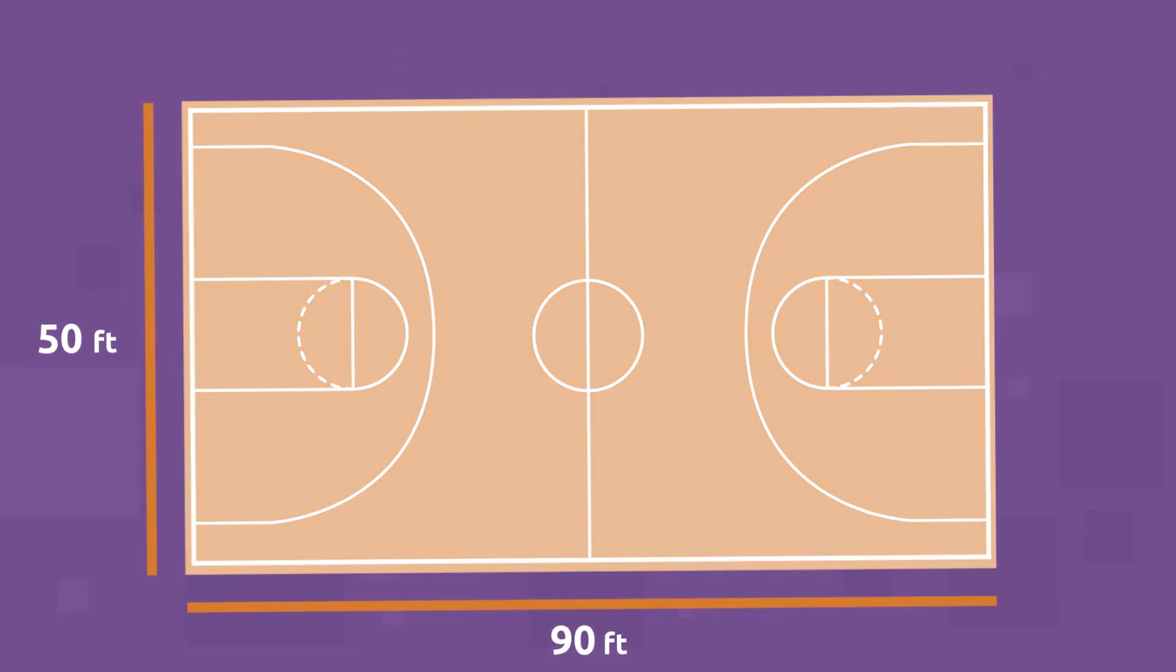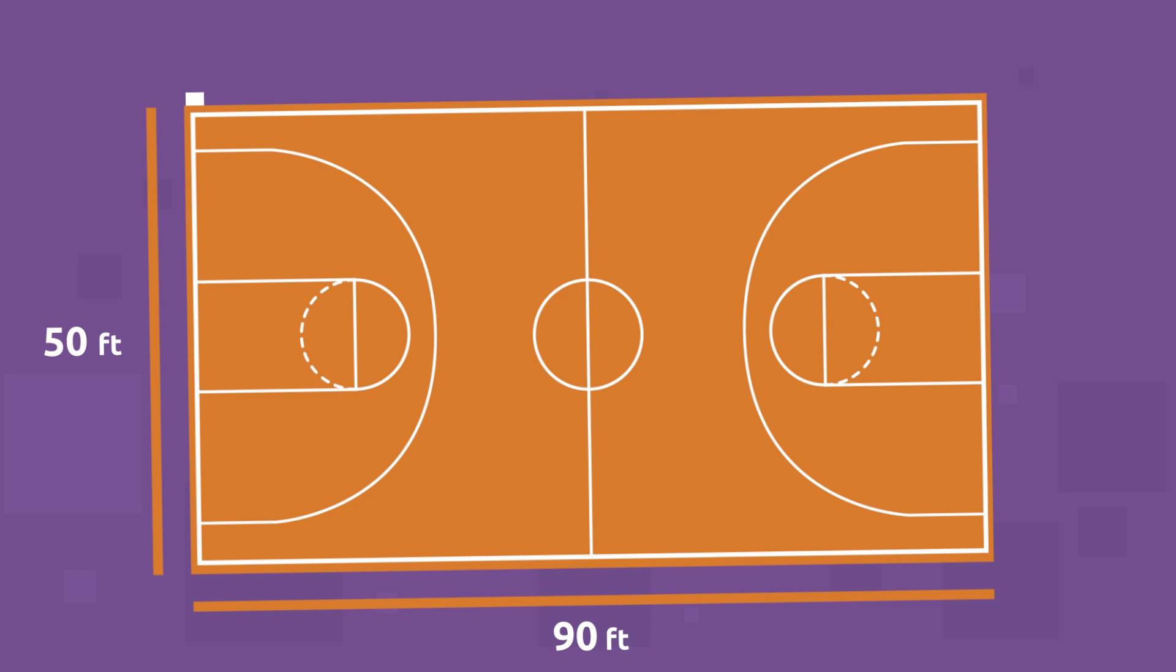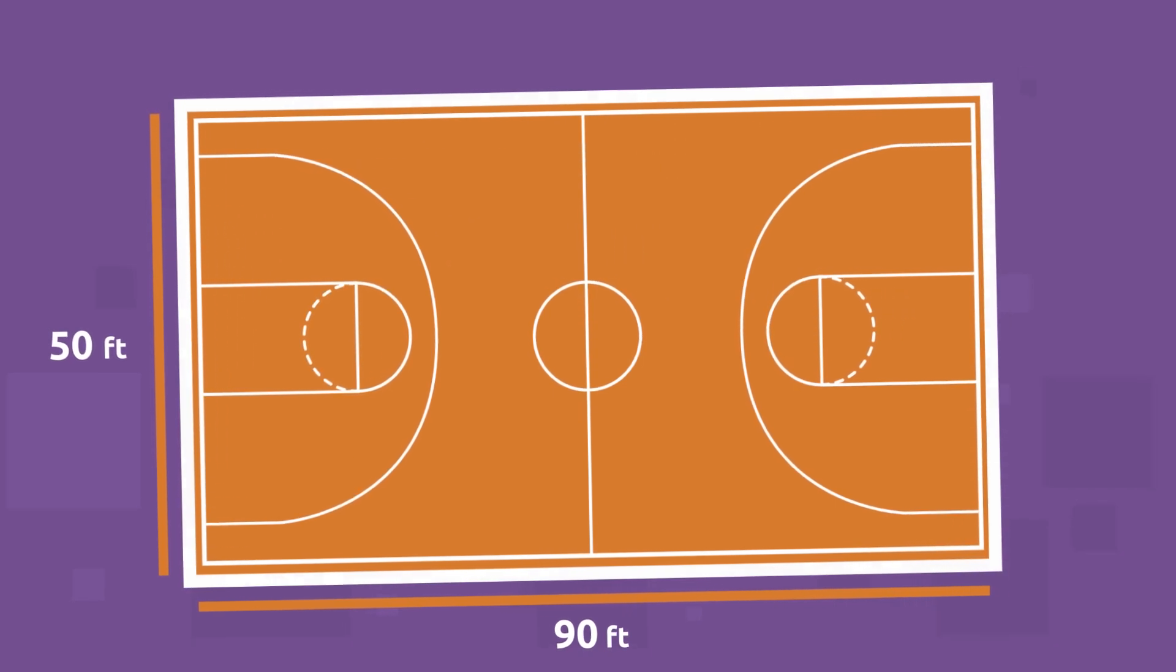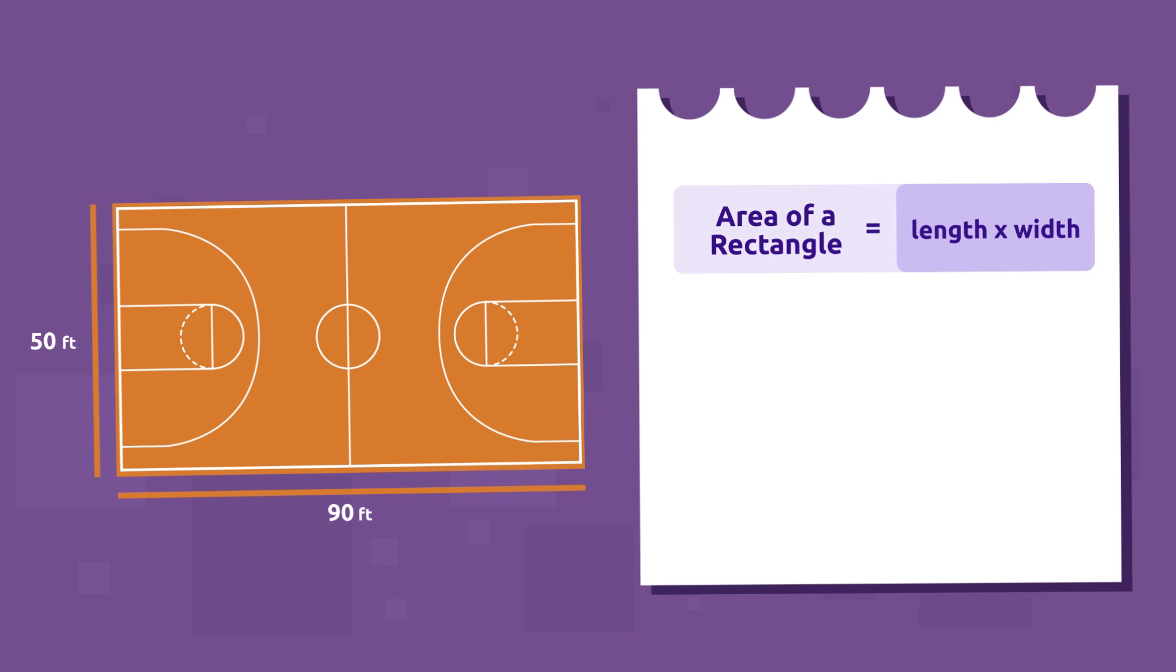we need to calculate the area of the basketball court. And as you can see, it is a rectangle. Remember that we must multiply length times width.